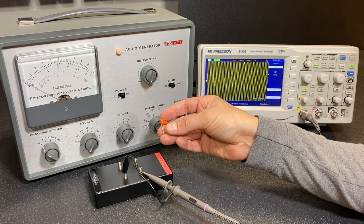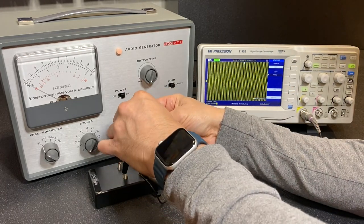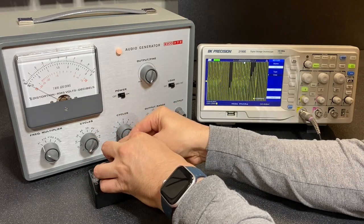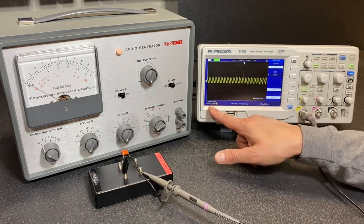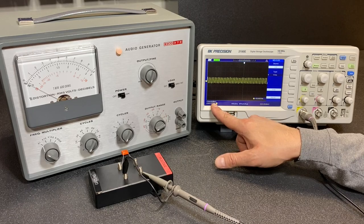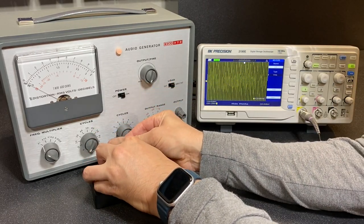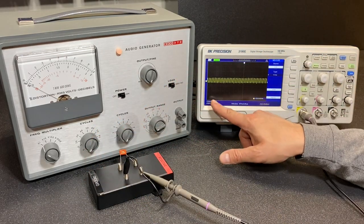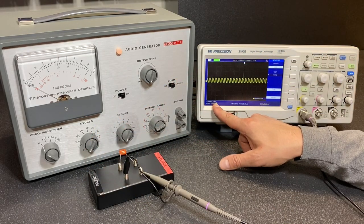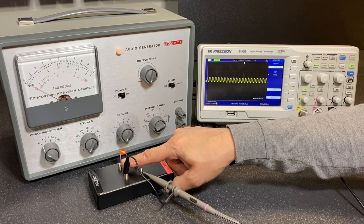Let's test one of the 0.022 capacitors. In this position, 0.88 millivolts. And in this position, a lower 0.72 millivolts, indicating that this is our shielded side. Let's mark it.